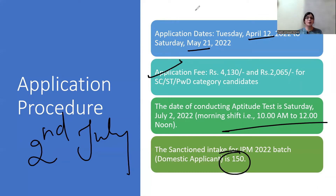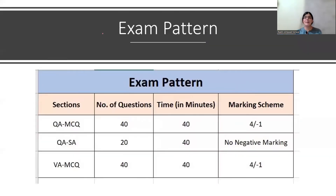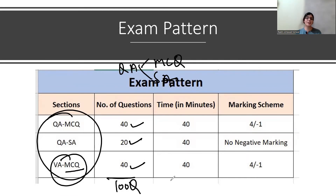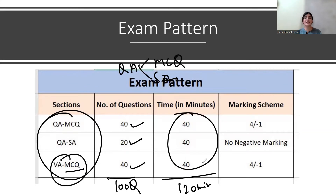Now let's look at the exam pattern. There are three sections: first is Quantitative Ability with two parts — MCQ and short answers. The second section is Verbal Ability, MCQ. In QA MCQ, there are 40 questions; in short answers, 20 questions; and in Verbal Ability, 40 questions — making a total of 100 questions. Each section has 40 minutes, totaling 120 minutes, so this is a 2-hour exam. For a correct answer, you get plus 4, and for a wrong answer, minus 1. This makes it a 400 marks exam paper.